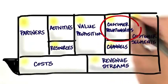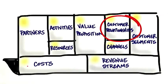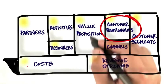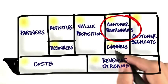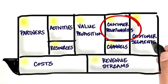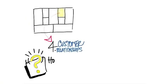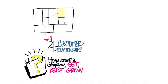Customer relationships is the fourth piece, and it has a really interesting interaction with the other three pieces. It basically asks: how do I get customers, how do I keep them, and how do I grow them?